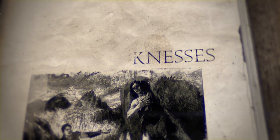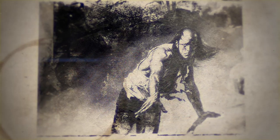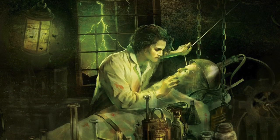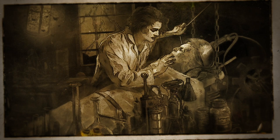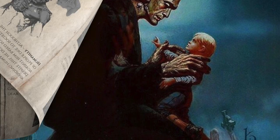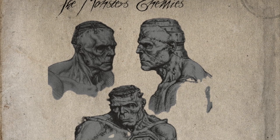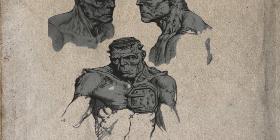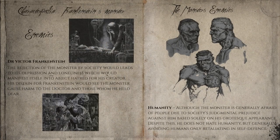Frankenstein's monster seems to be physically durable but mentally vulnerable, turning his rage both inwards and outwards when victimized. The rejection of the monster by society led to his depression and loneliness, which manifested in an abject hatred for its creator, causing the monster to harm the doctor and those whom he held dear. The monster is generally afraid of people due to society's judgmental prejudice against him based solely on his grotesque appearance. Despite this, he does not hate humanity, but generally avoids humans, only retaliating in self-defence.